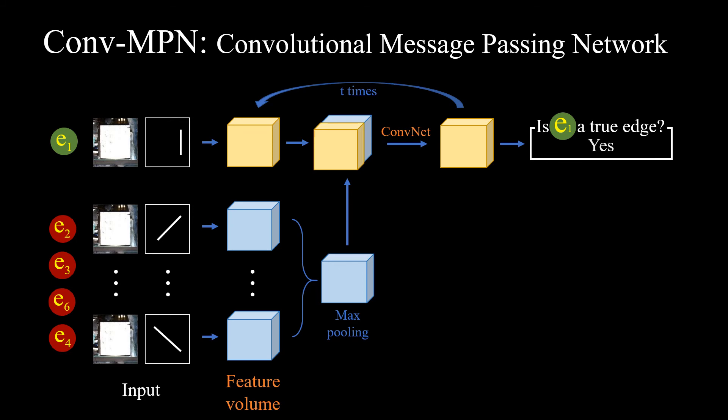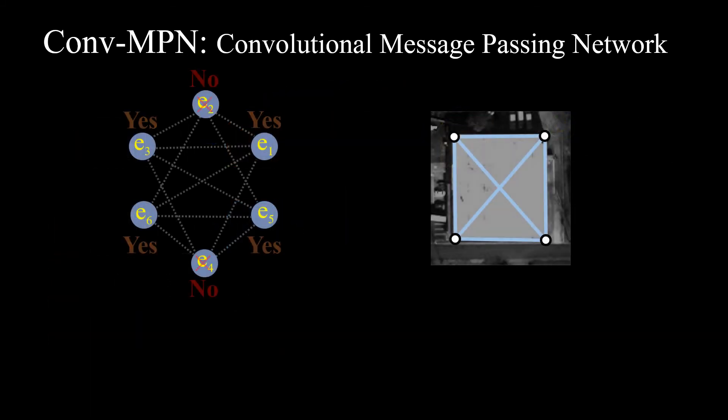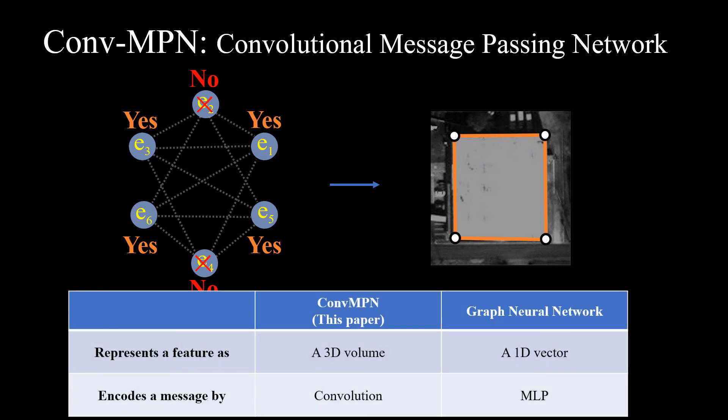We exchange messages a few times before classifying each node to be true or false. We collect the true classified nodes to reconstruct a building structure.